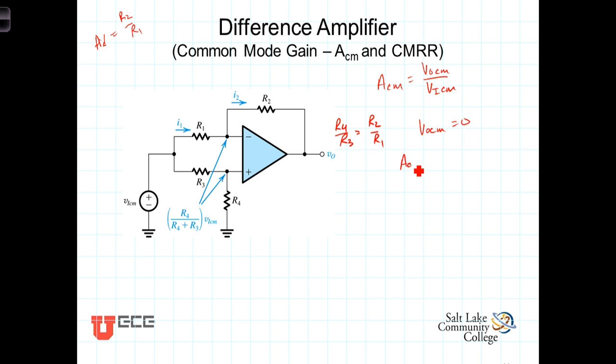So, the common mode gain is then zero over Vin common mode, which equals zero. Effectively, we're multiplying this common mode noise by a gain term of zero and giving us zero volts out.